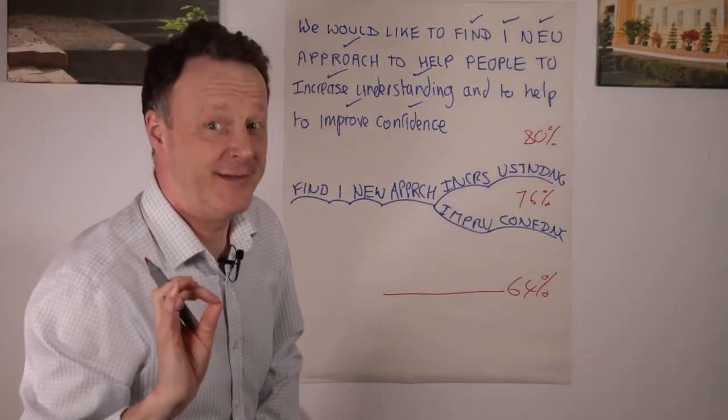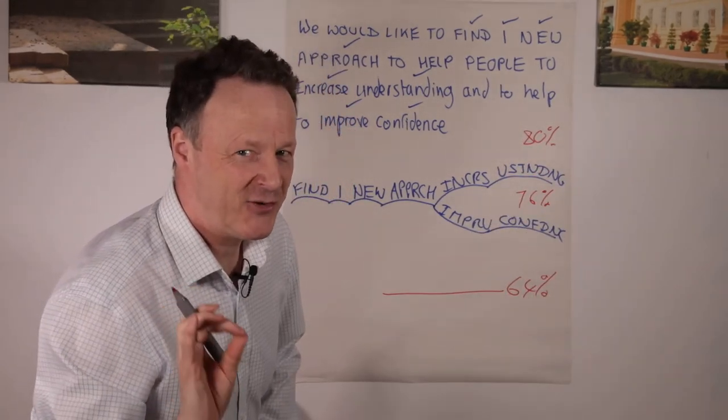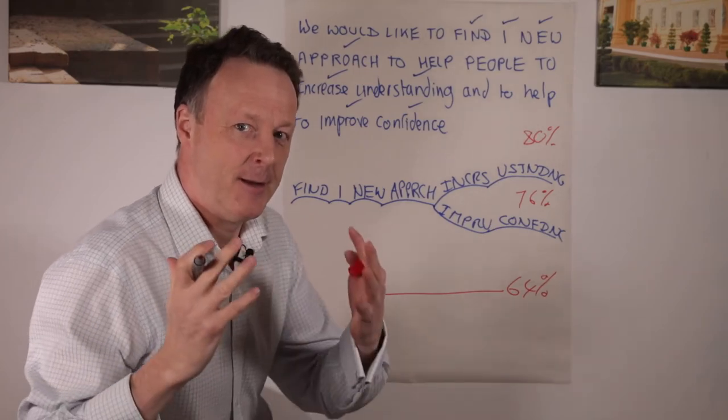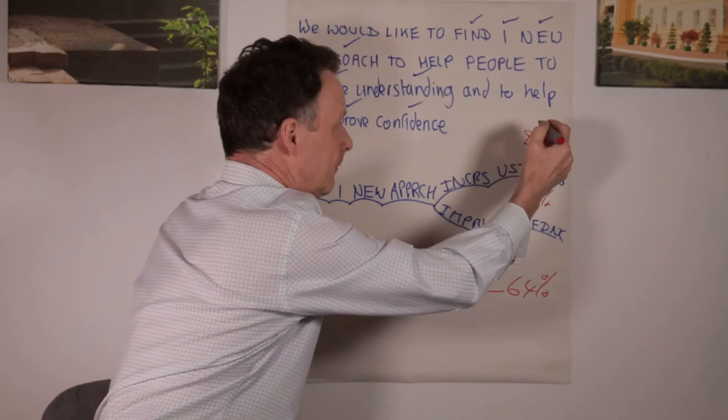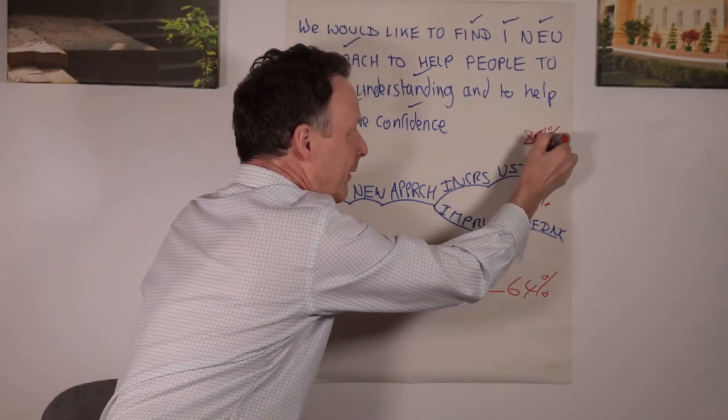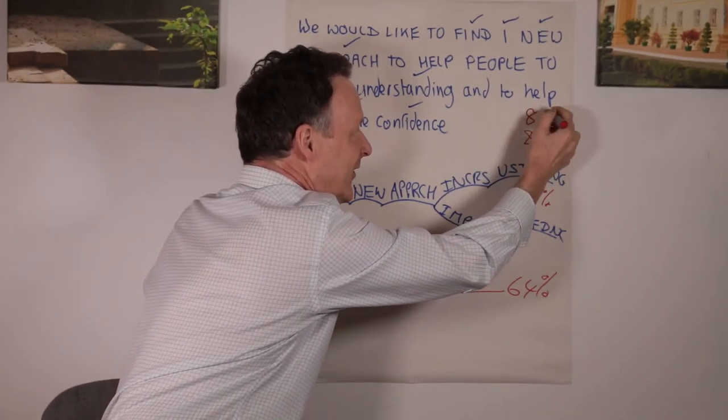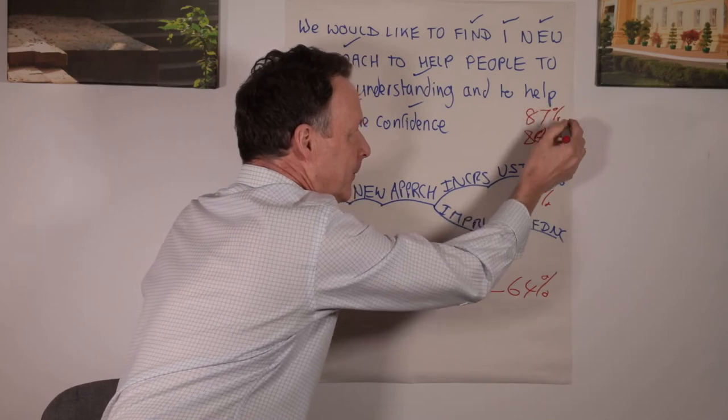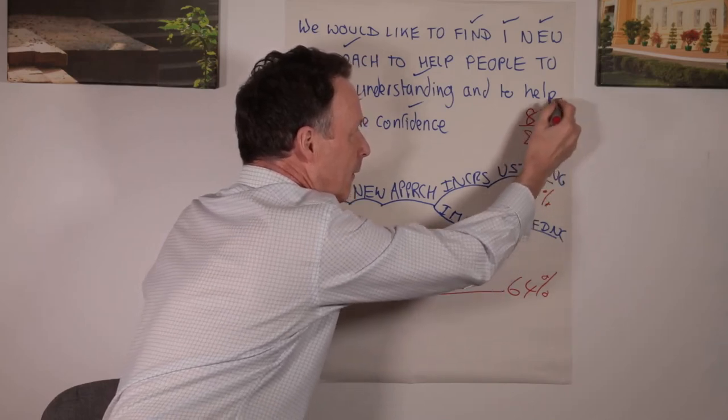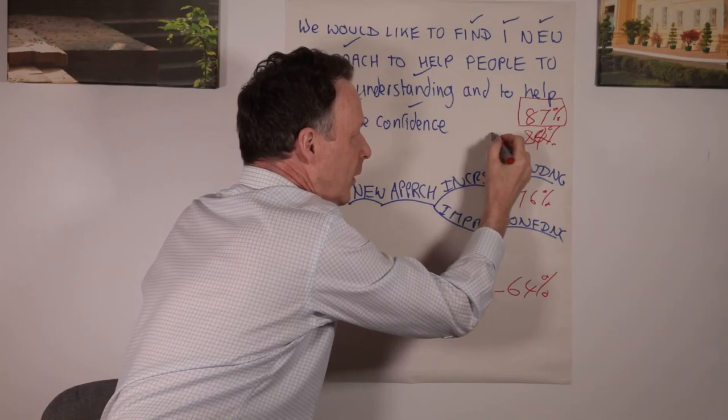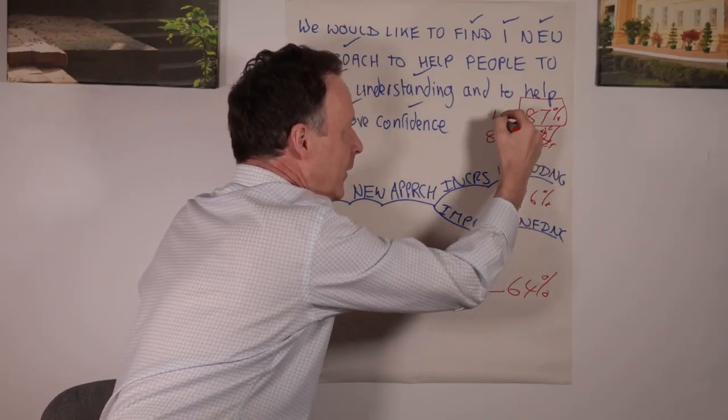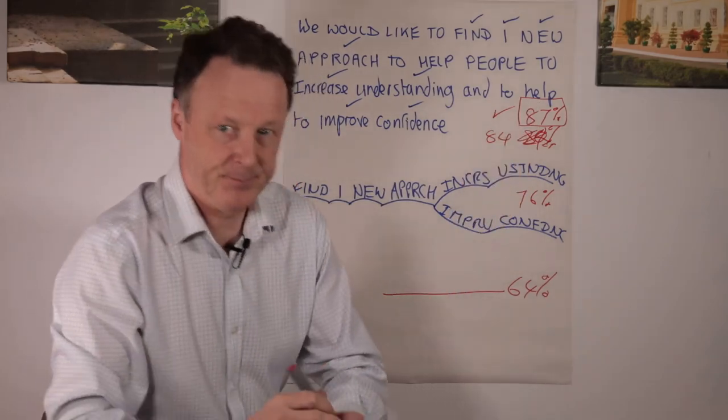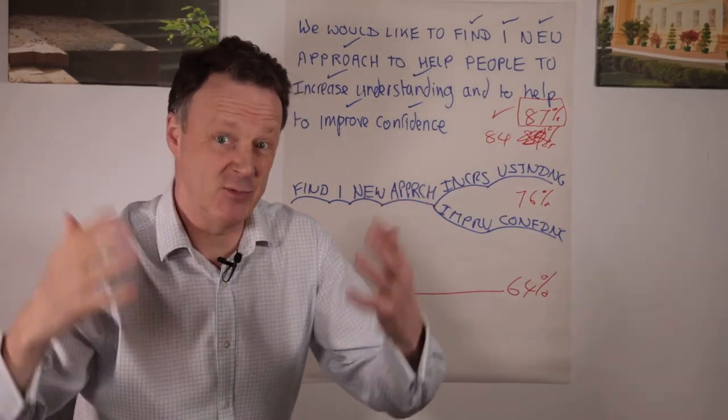But for those of us who are dyslexic, there's a special treat in store because our real-time understanding goes even higher. It goes up to 84% if you're not dyslexic, and if you're dyslexic, 87%. That's a game changer.